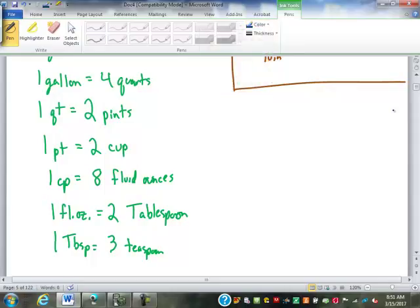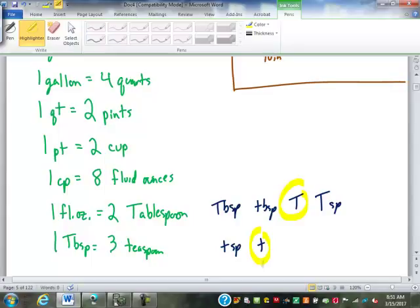Side note here. Acceptable abbreviations for tablespoon: big TBSP, little tbsp, big T or big TSP. Acceptable abbreviations for teaspoon: little tsp or just little t. Currently, these are the most common ones, just the capital T and the little t. But you will see the others. Be careful because in this one it's really easy to look at this and think teaspoon. Because I'm used to seeing TSP for teaspoon. So just be very careful of those variations.